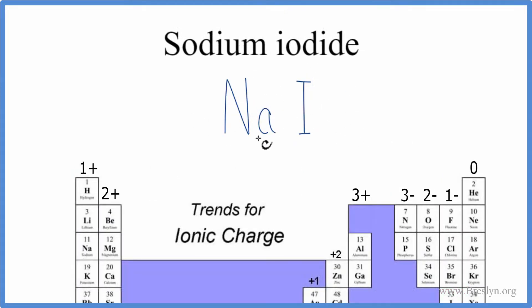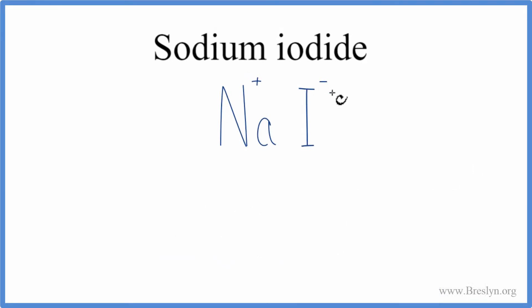So back to the periodic table, sodium group 1, that has a 1 plus charge, we'll just write a plus. And then iodine, that's in group 17, sometimes called 7A, that has a 1 minus charge. We'll write our minus up here.